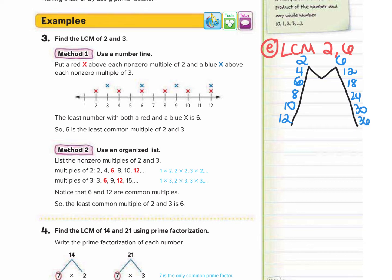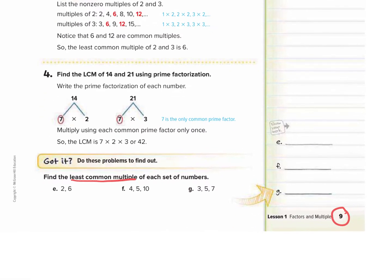Now we want to find a multiple that they have in common, but that is the least — the smallest multiple they have in common between two and six. They actually both have six as a multiple. They also have 12 as a multiple, but that's not their least multiple. So the least common multiple between two and six is six. We're going to go down and write six on our answer line.